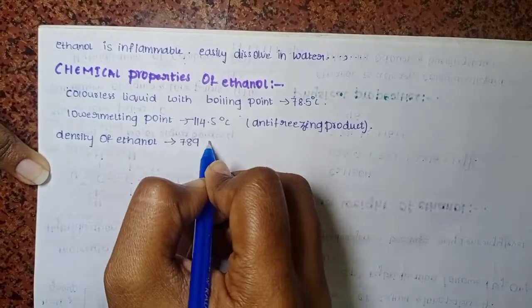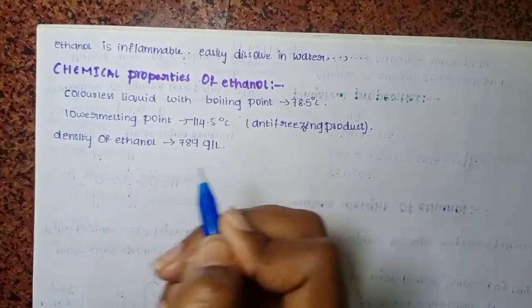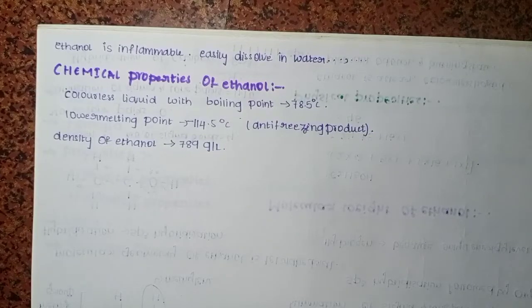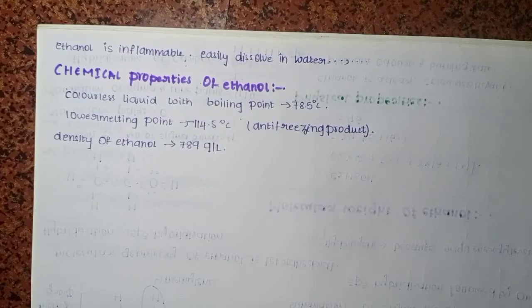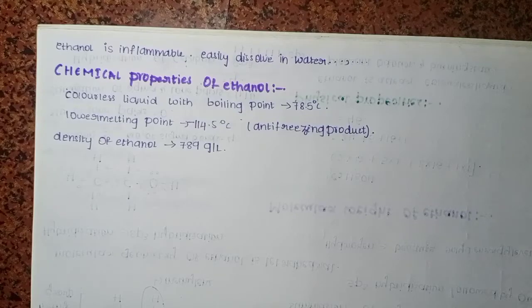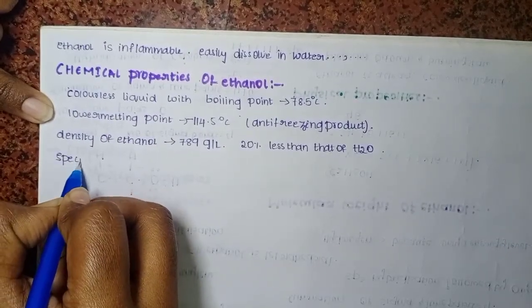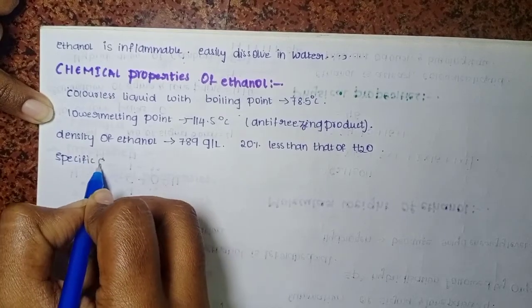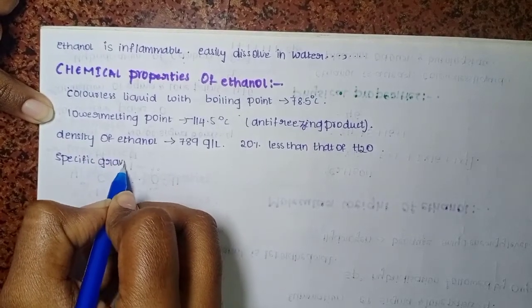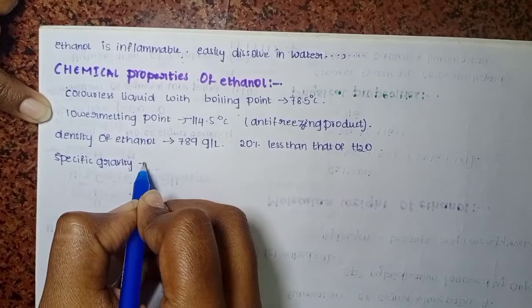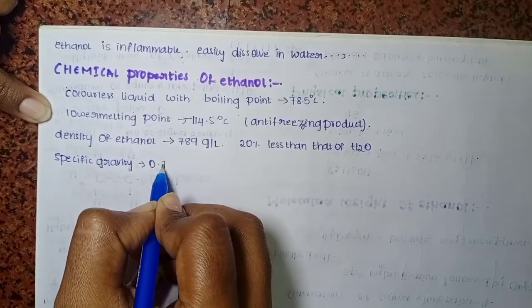The density of ethanol is 789 grams per liter, which is 20% less than that of water. The specific gravity of ethanol is 0.789.